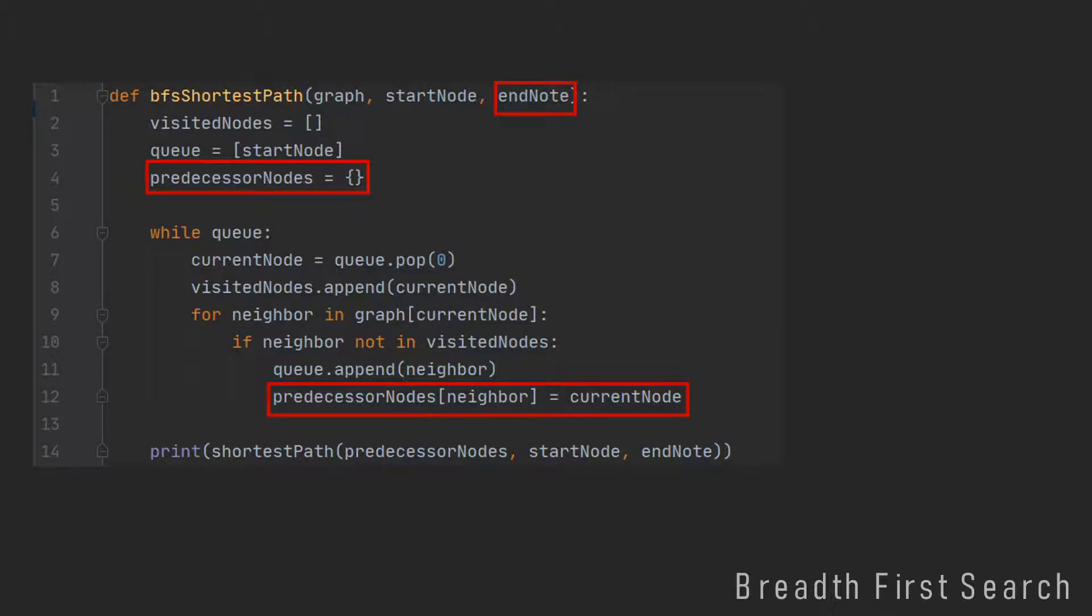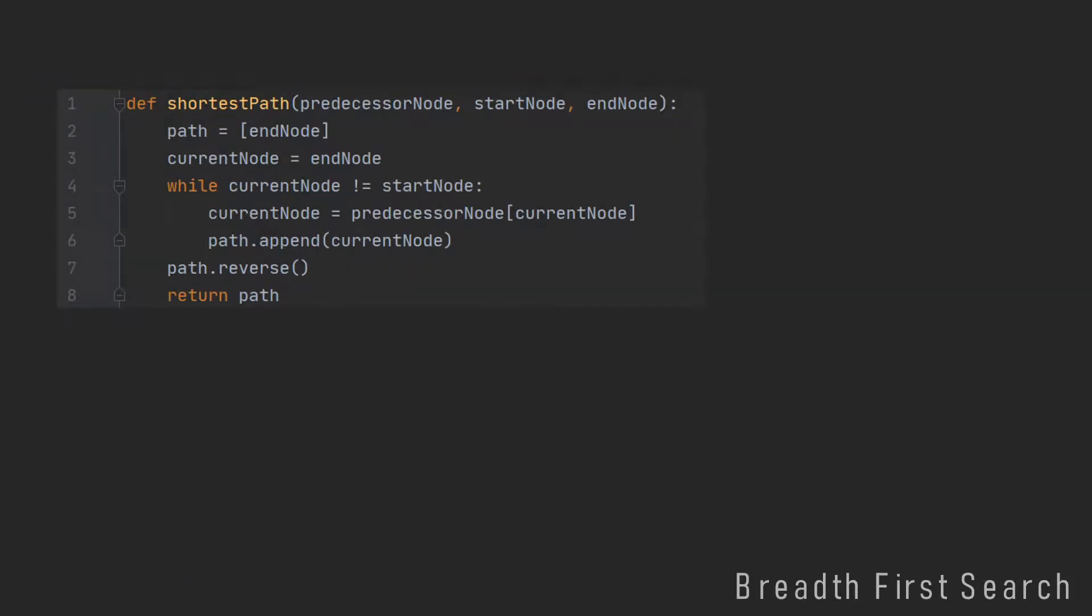So these are all things that are changed in this function. And now we have this dictionary of predecessor nodes, and we can use it to backtrack the shortest path from the start node to the end node. So I wrote a function that takes this predecessor nodes dictionary and the start node and the end node and creates a path from it.